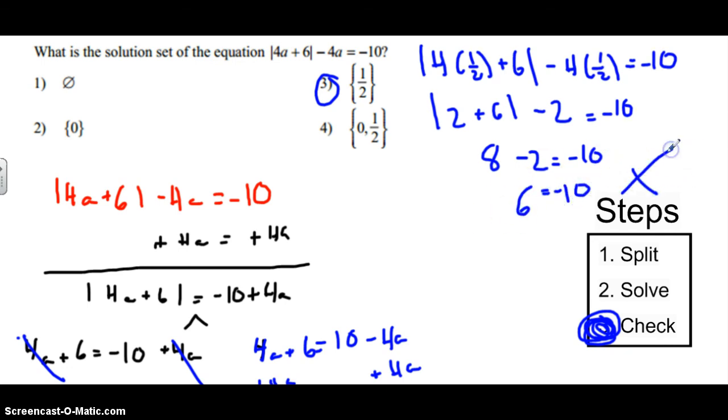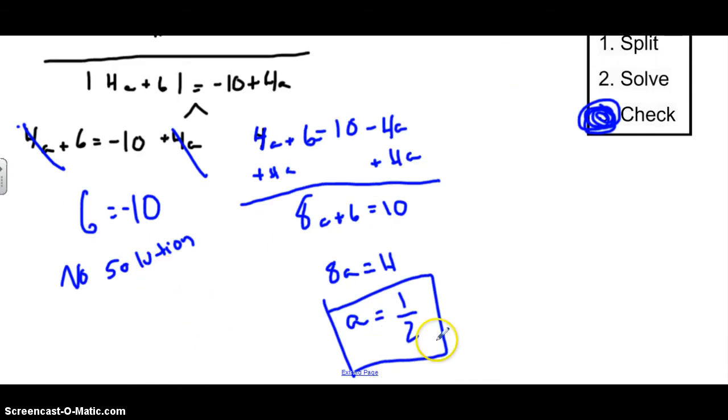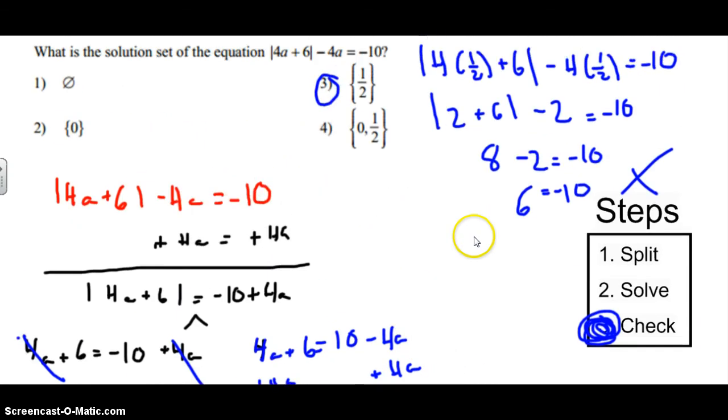So let's see. Our first one had no solution. This, we found out, doesn't even work. So our final answer is just going to be no solution. And that's what this means. That means no or no solution. The answer was 1.